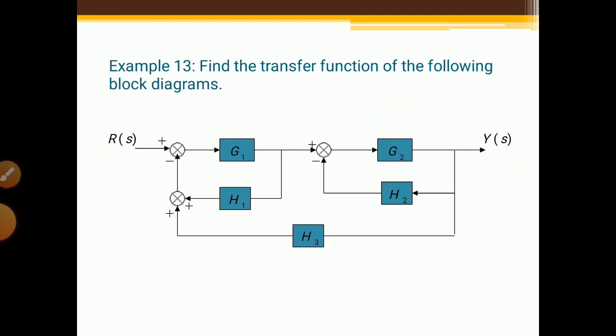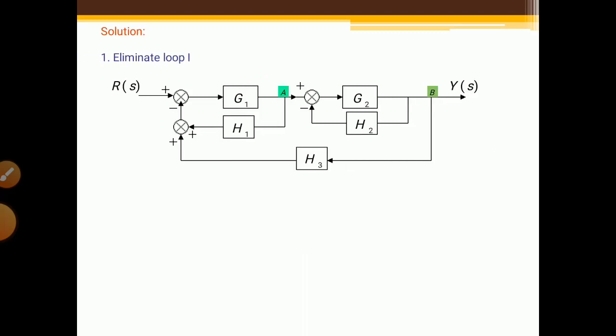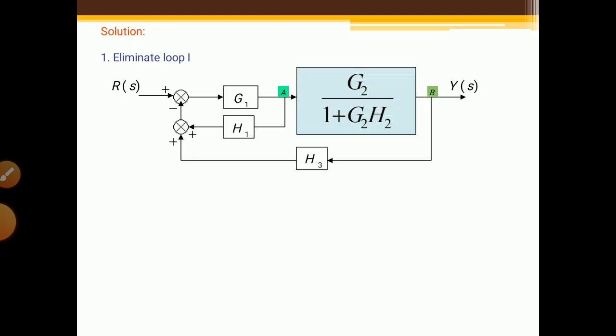One more question is shown here: find the transfer function of the following block diagram. In the solution, the first step is to eliminate loop 1. This is a negative feedback loop and can be solved easily. After solving it, we get G2 / (1 + G2H2). This is the answer for the first feedback loop. Next, move the pickup point A behind the block G2 / (1 + G2H2).